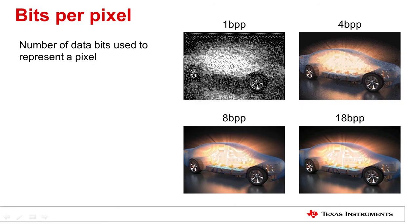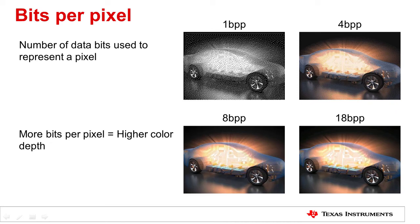Bits per pixel is the number of data bits used to represent a pixel. Here we have an example of how bits per pixel can affect image quality. As you can see, more bits used per pixel results in more color depth. Typically for RGB data, 18 bits per pixel or 24 bits per pixel are used. Generally, these parameters can be found in the display panel's data sheet and can be changed based on different use cases.